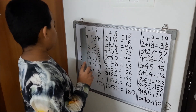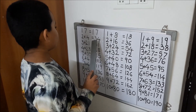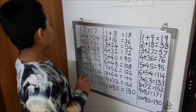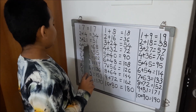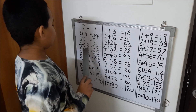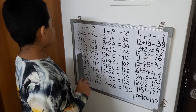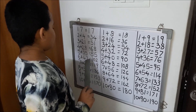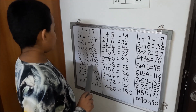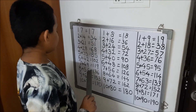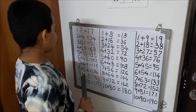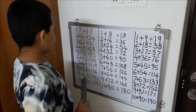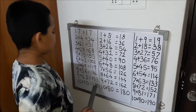17×1 is equal to 17. 2 plus 1 is equal to 3, write 4. 3 plus 2 is equal to 5, write 1. 4 plus 2 is equal to 6, write 8. 5 plus 3 is equal to 8, write 5. 6 plus 4 is equal to 10, write 2. 7 plus 4 is equal to 11, write 9. 8 plus 5 is equal to 13, write 6. 9 plus 6 is equal to 15, write 3. 10 plus 7 is equal to 17, write 0.